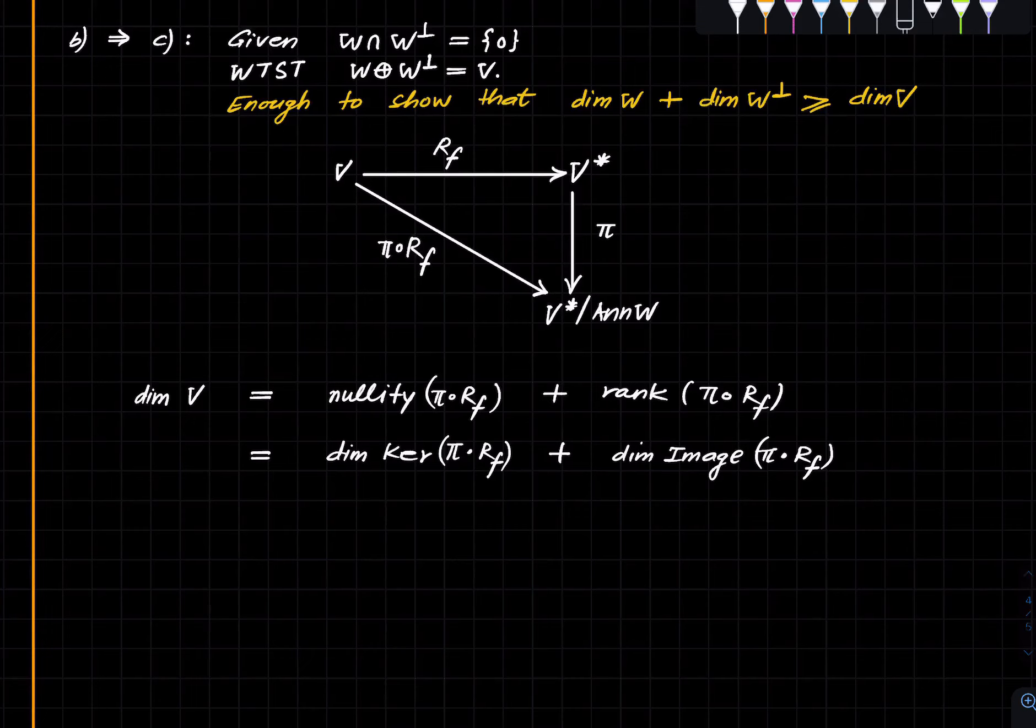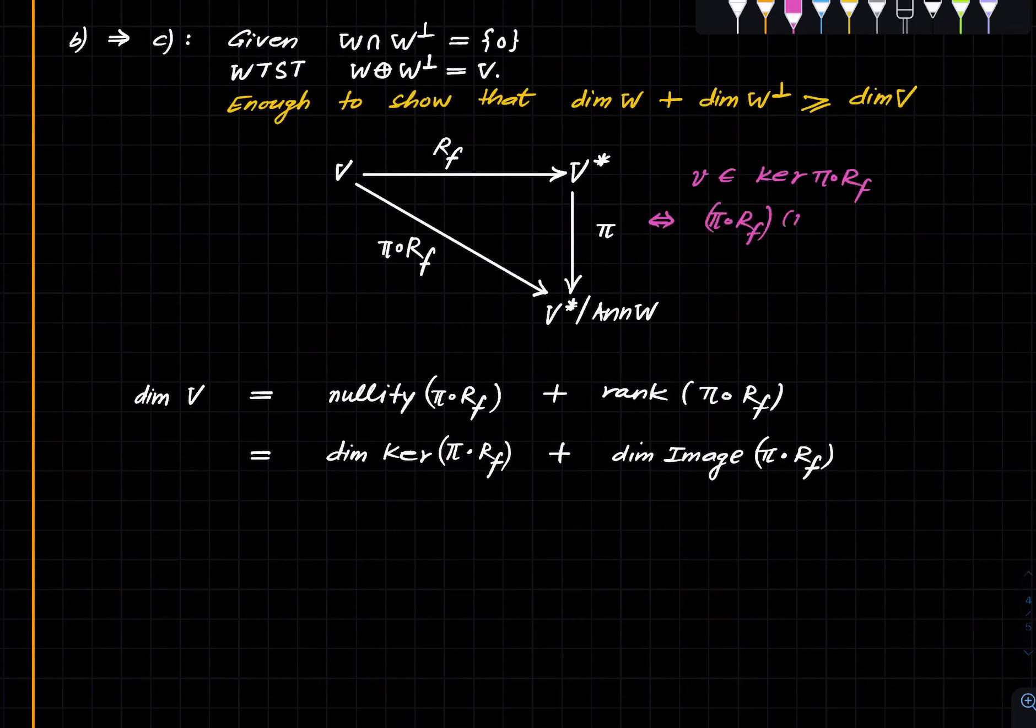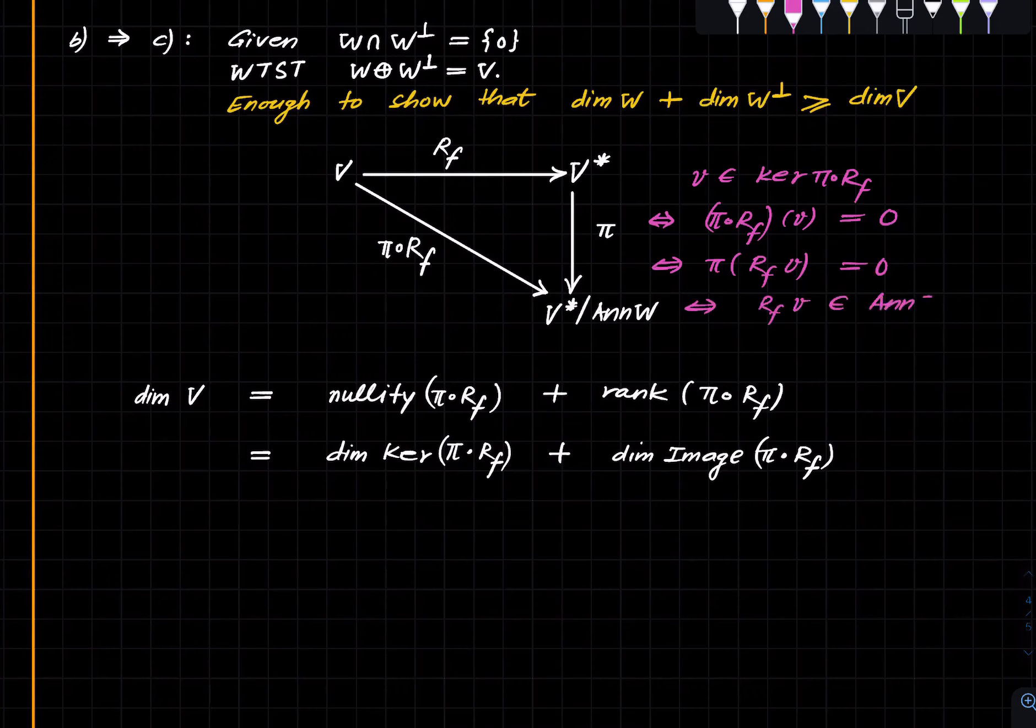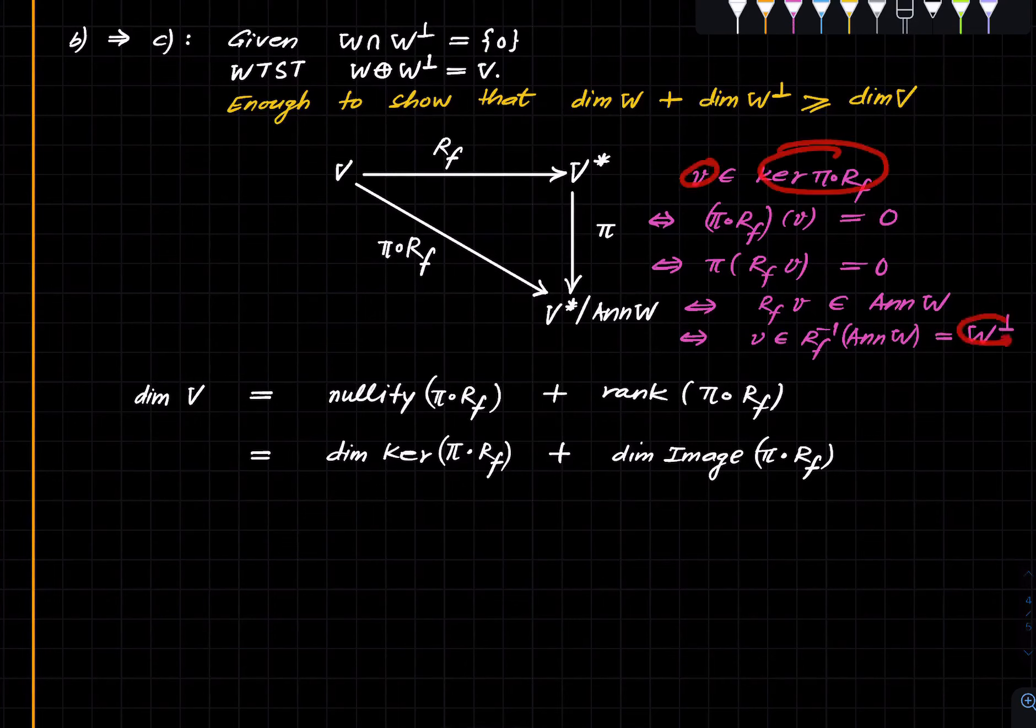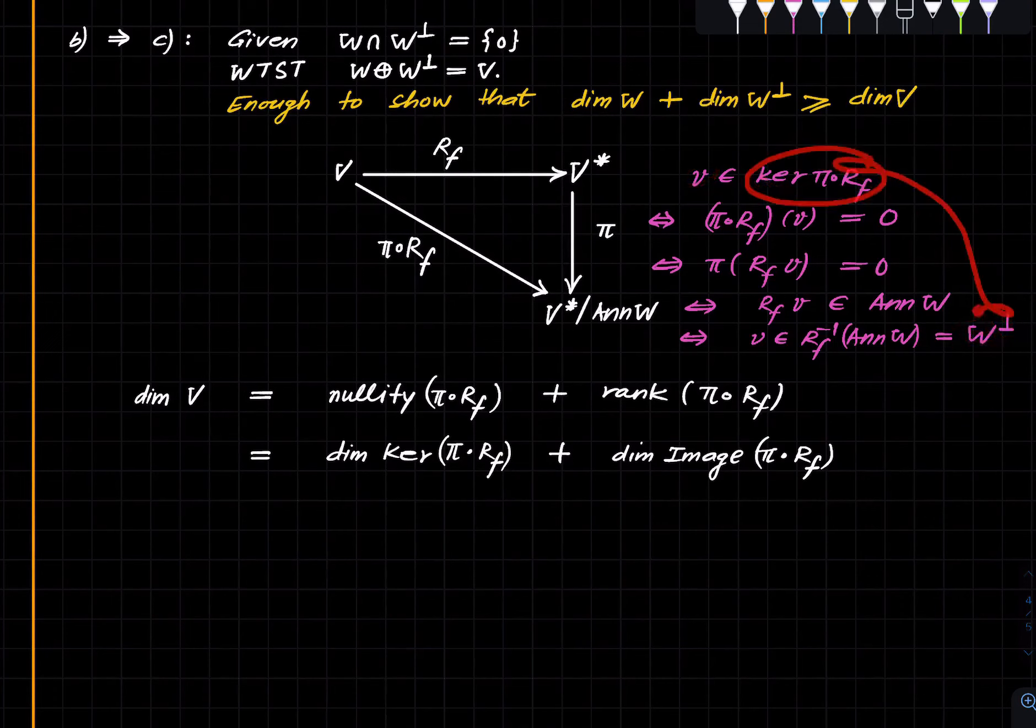V is in kernel phi composed R_F if and only if phi composed R_F of V is zero, if and only if phi of R_F of V is zero, if and only if R_F of V is in the annihilator of W, if and only if V is in this space, which as we saw in the recall is W perp. So the upshot is these two things are equal.